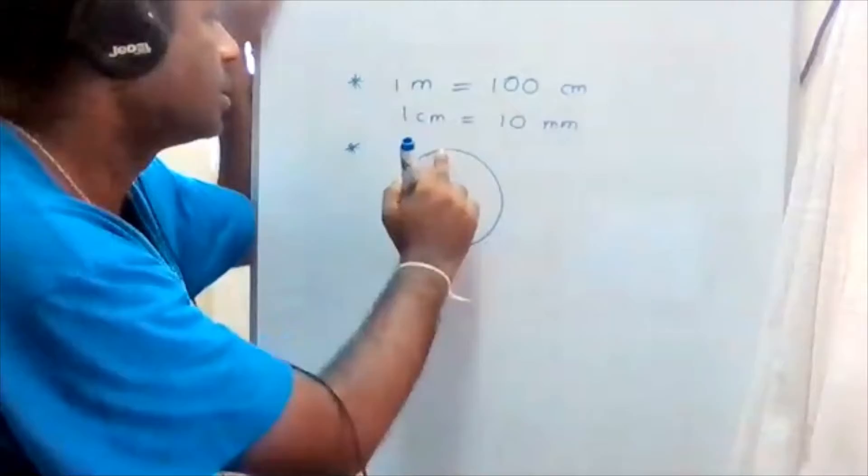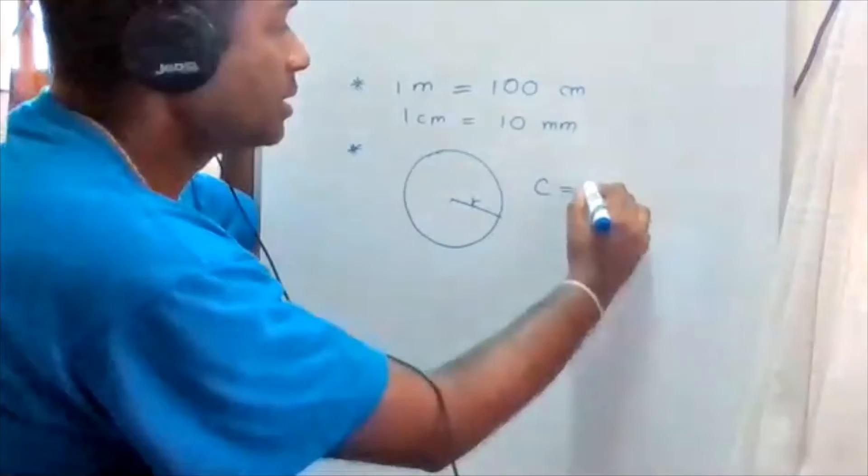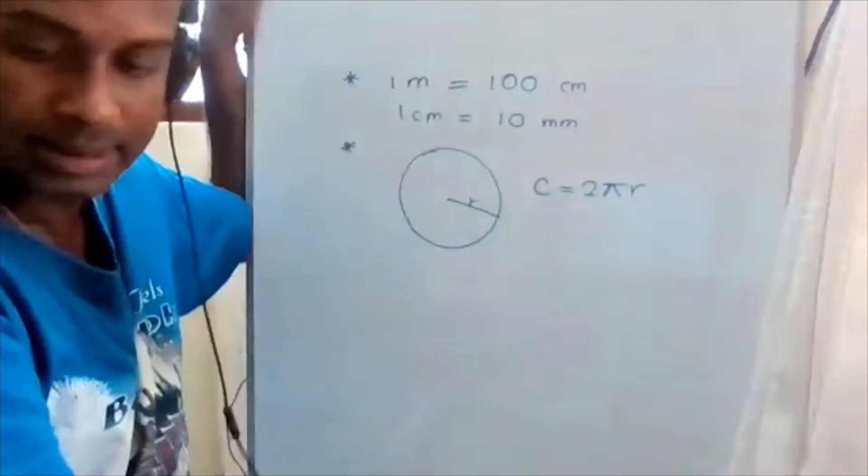If you are given a circle and you want to find its circumference — the circumference is the length of the curved line around the circle — the circumference is given by two pi r, where r is the radius. This is a very important formula to remember.